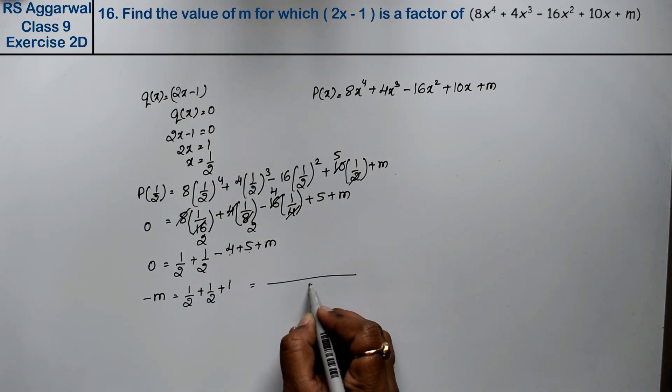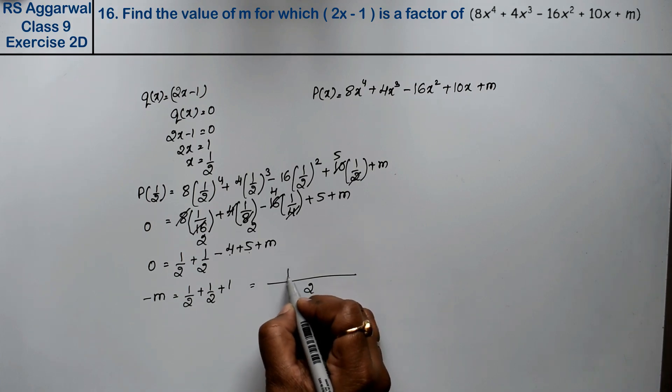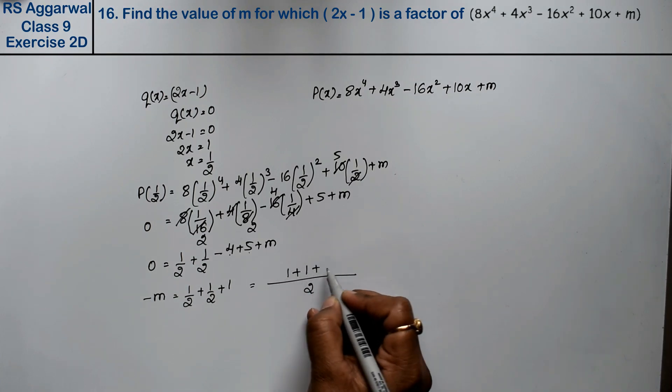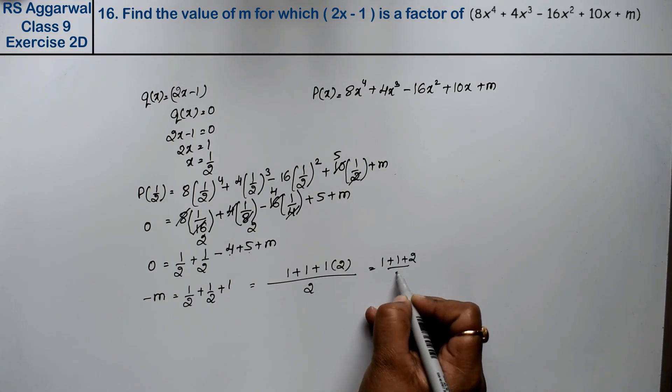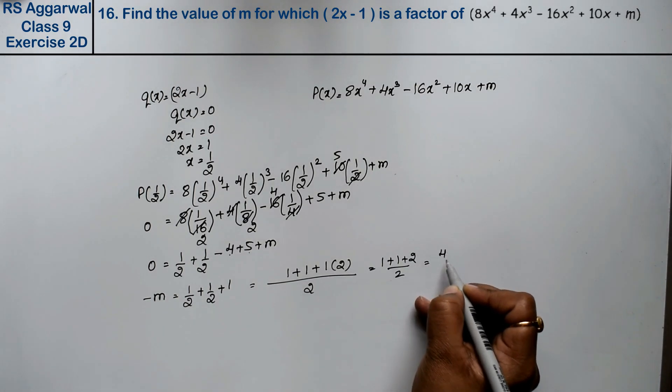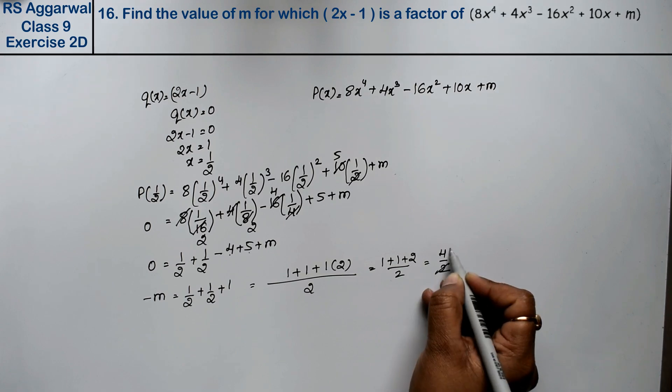Now see, LCM is 2. So 1 plus 1 plus 1 times 2, that is 1 plus 1 plus 2 upon 2, which equals 4 upon 2, which is 2.